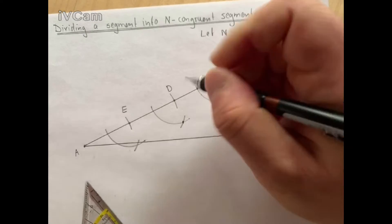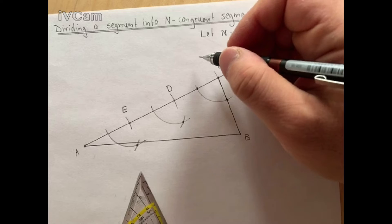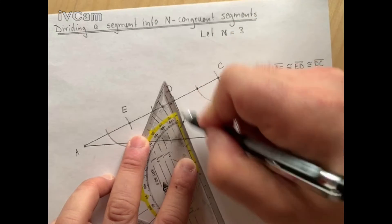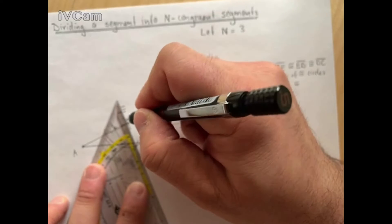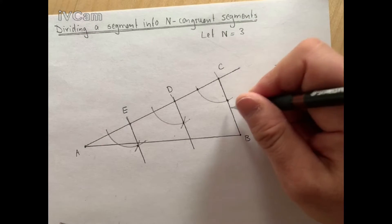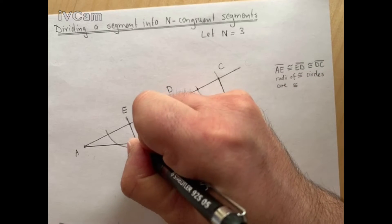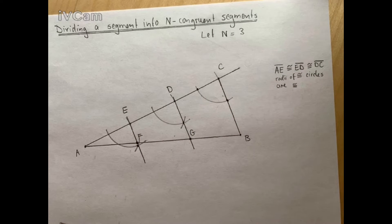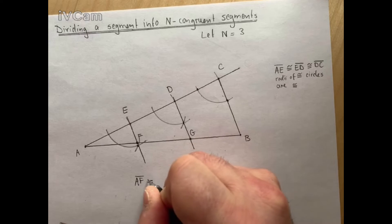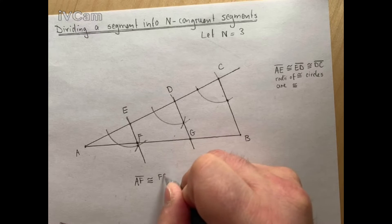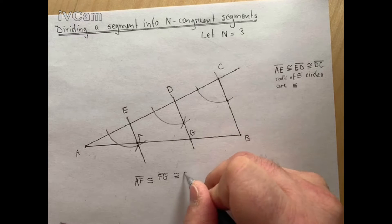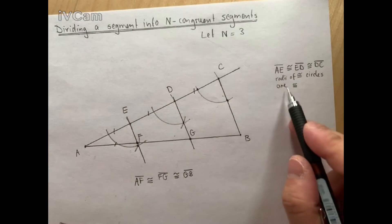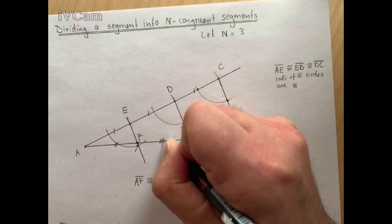Wherever the arcs intersect, I'll label those points. We connect point D with its intersection point, and connect point E with its intersection point. These lines are now all parallel. Let's label these points as F and G — we already have B. It turns out that segment EF is congruent to segment FG, and congruent to segment GB. So these segments here are all congruent.